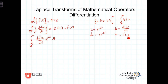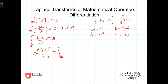Now let's plug in the u's, v's, du's, and dv's into the integration by parts formula. We get u, which is e to the minus st, times v, which is f of t. This u term and that v term have to be evaluated at the limits 0 minus to infinity, minus the integral from 0 minus to infinity of v, which is f of t, times du, which is minus s e to the minus st, and then the dt.